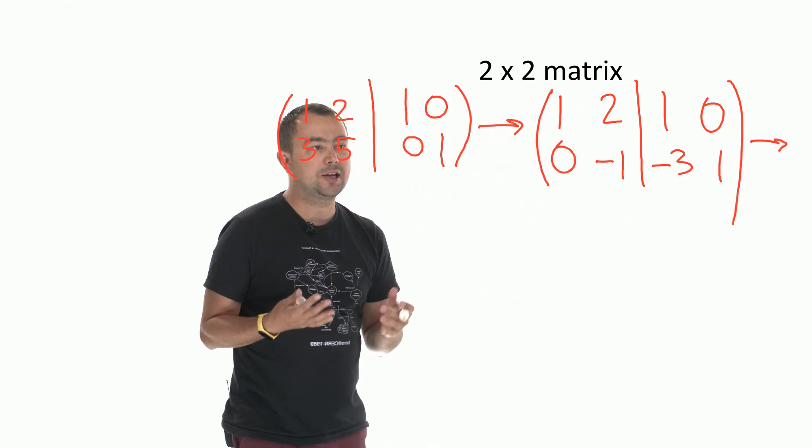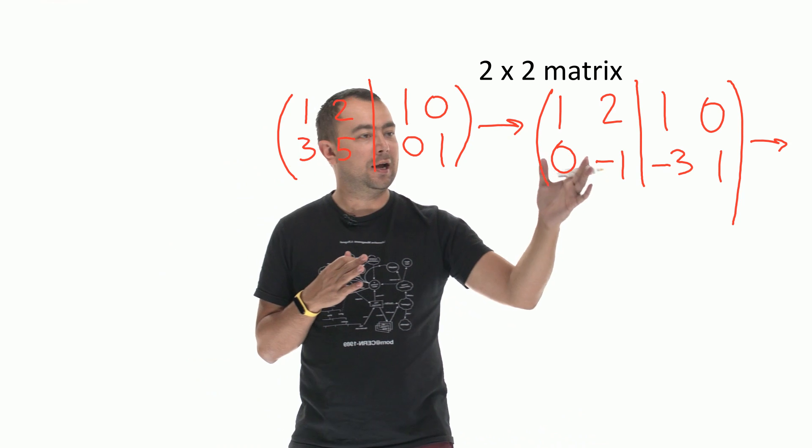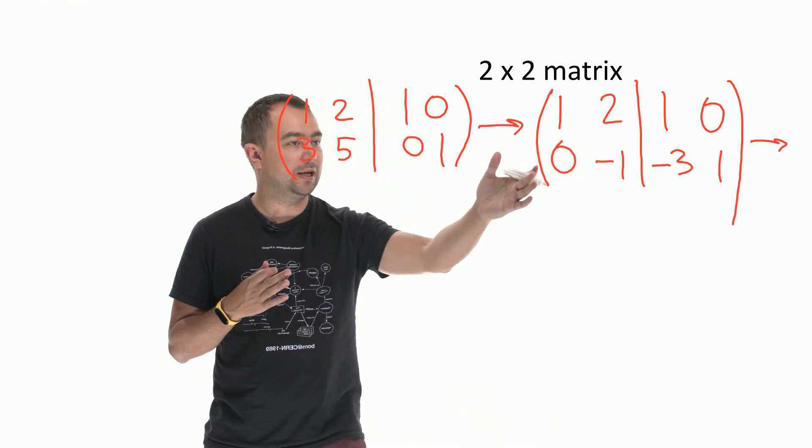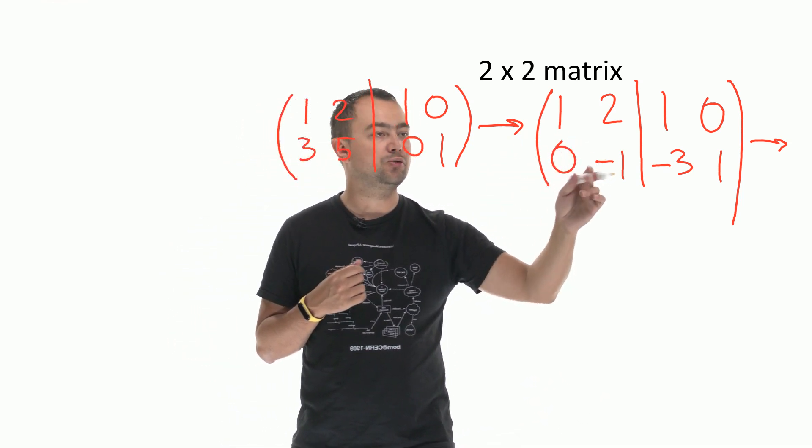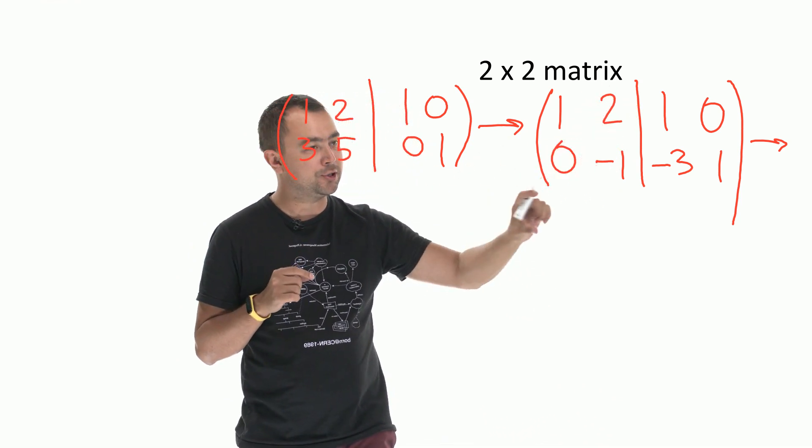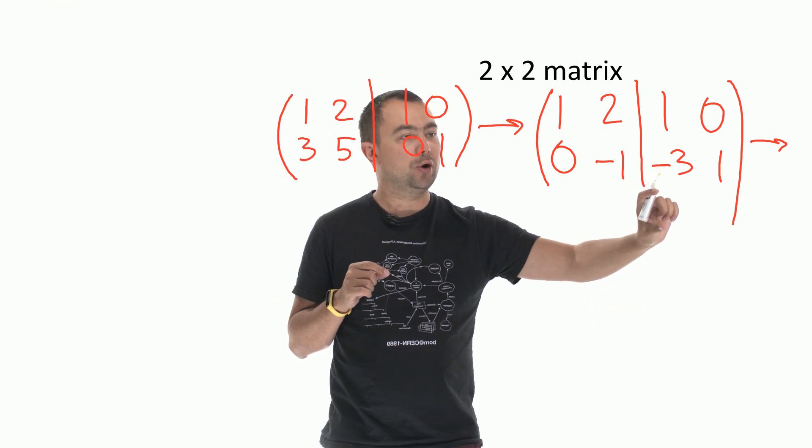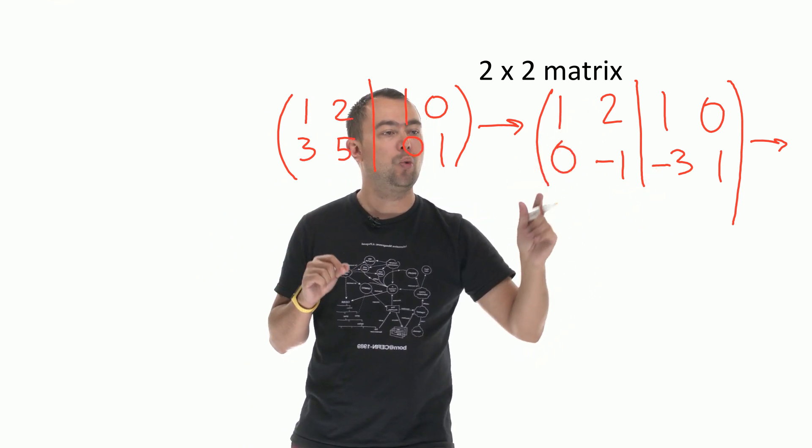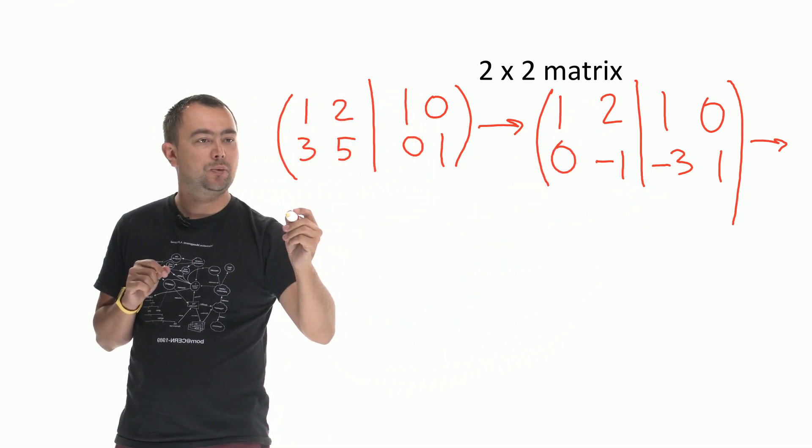So the next stage. I have a 0 on the bottom row, now I want to get rid of the 2. To do that I add the bottom row to the first row twice. So let's see what I get.